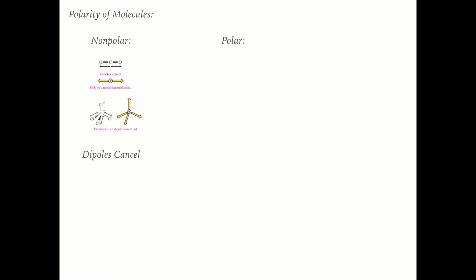For polar molecules, the dipoles do not cancel. In HCl, chlorine is more electronegative so the arrow points toward chlorine, with nothing to counteract it — so the molecule is polar. Similarly in NH3, nitrogen is more electronegative than hydrogen, the arrows point toward nitrogen, nothing pushes the other way, and the dipoles do not cancel, making NH3 polar.